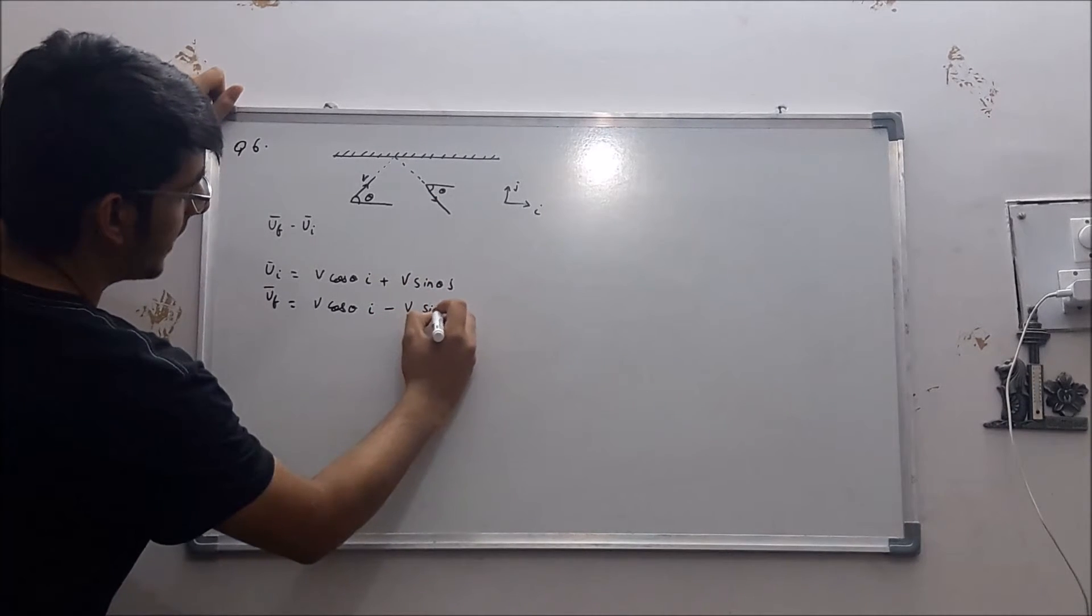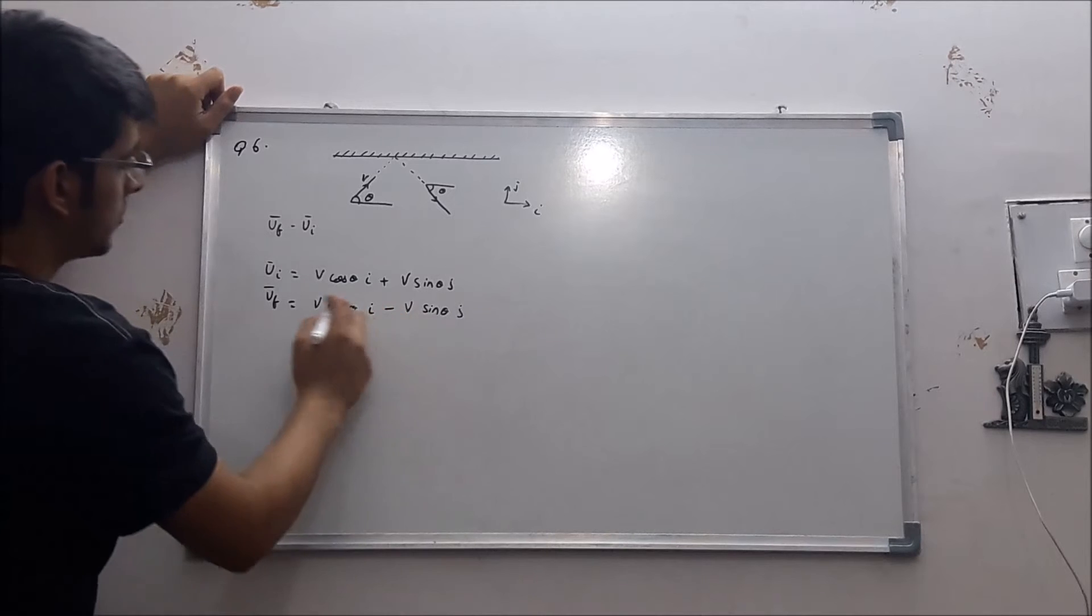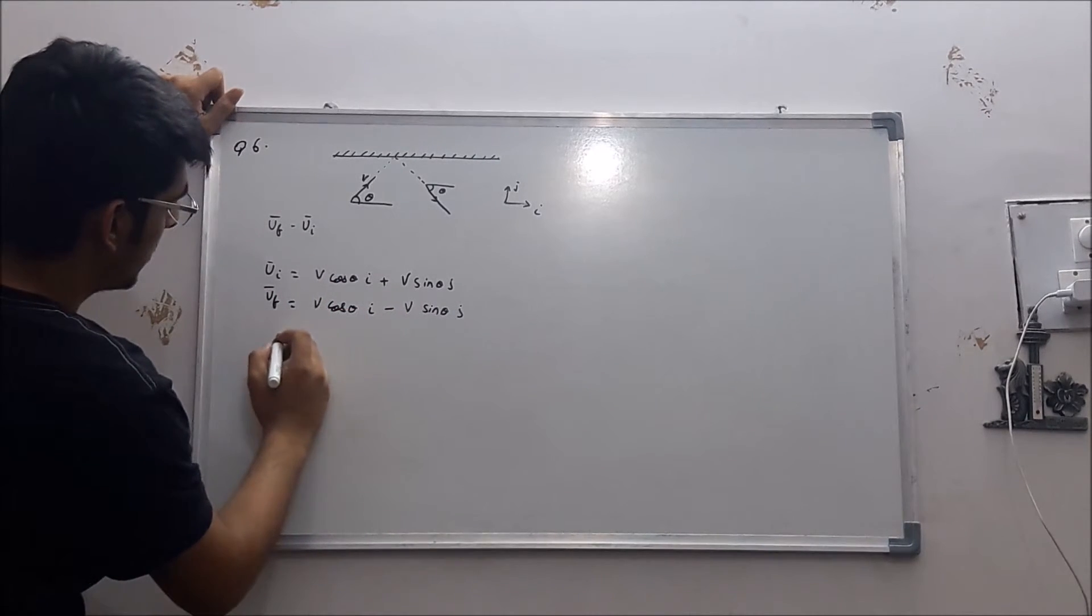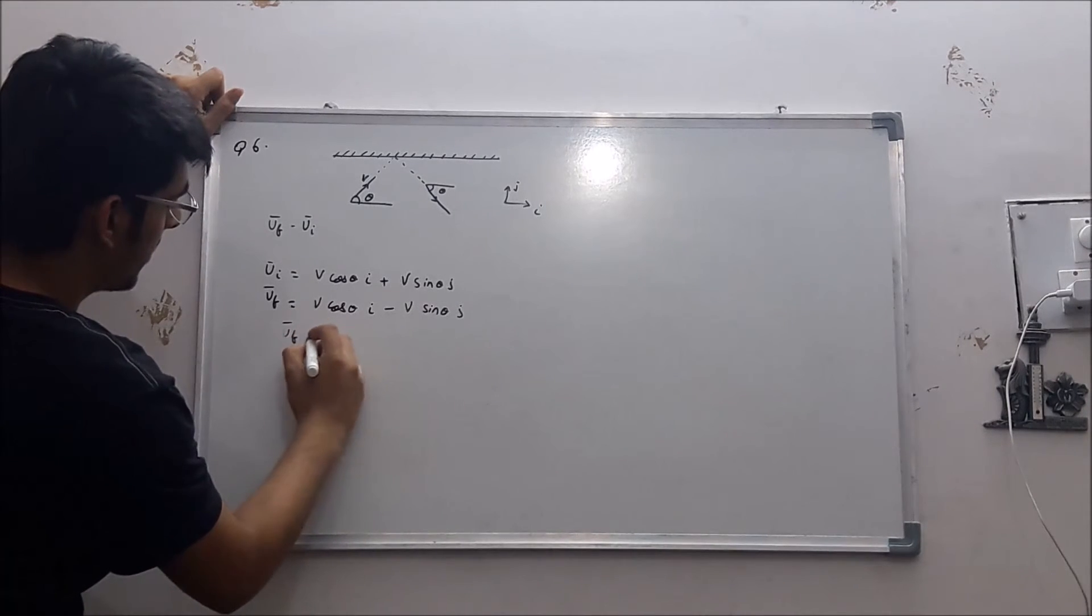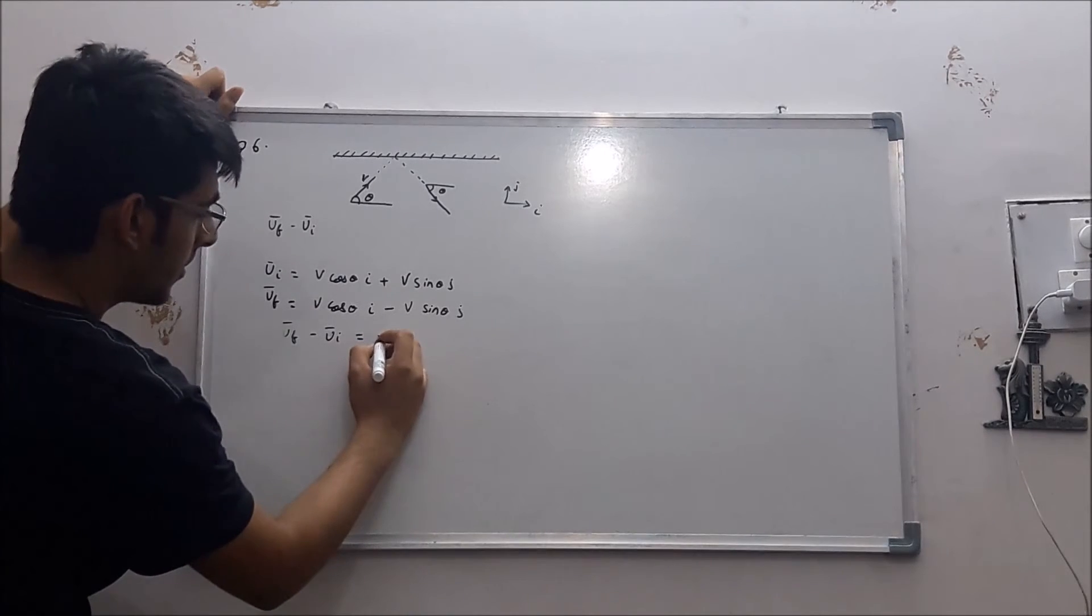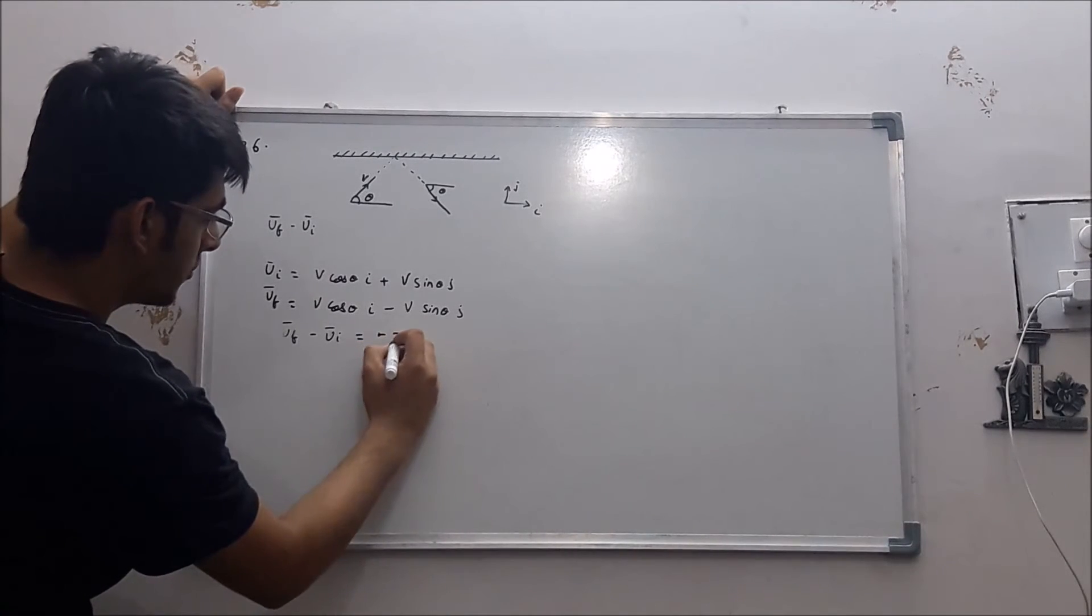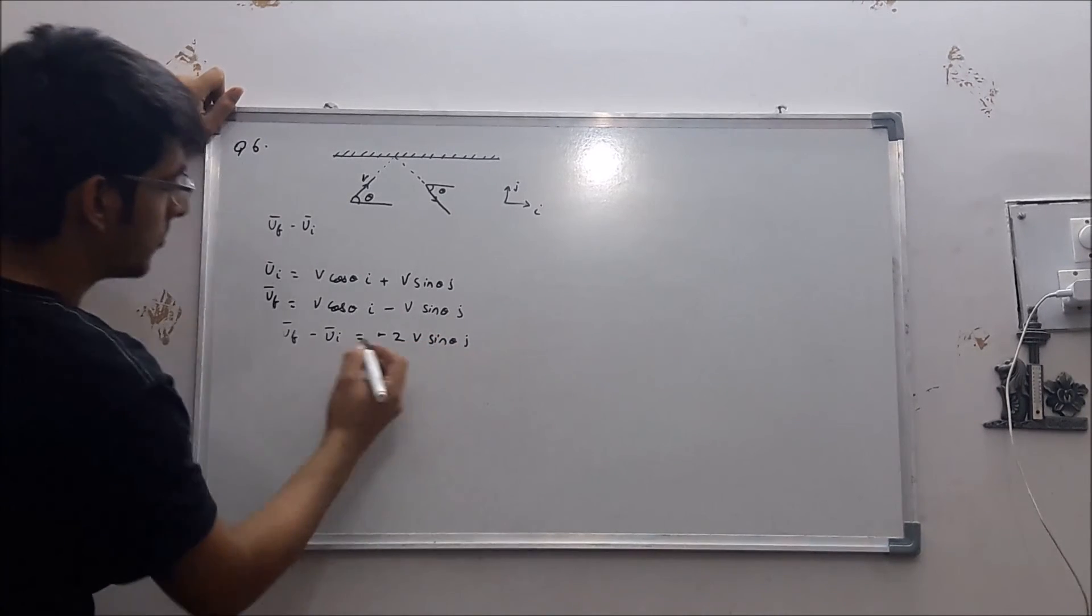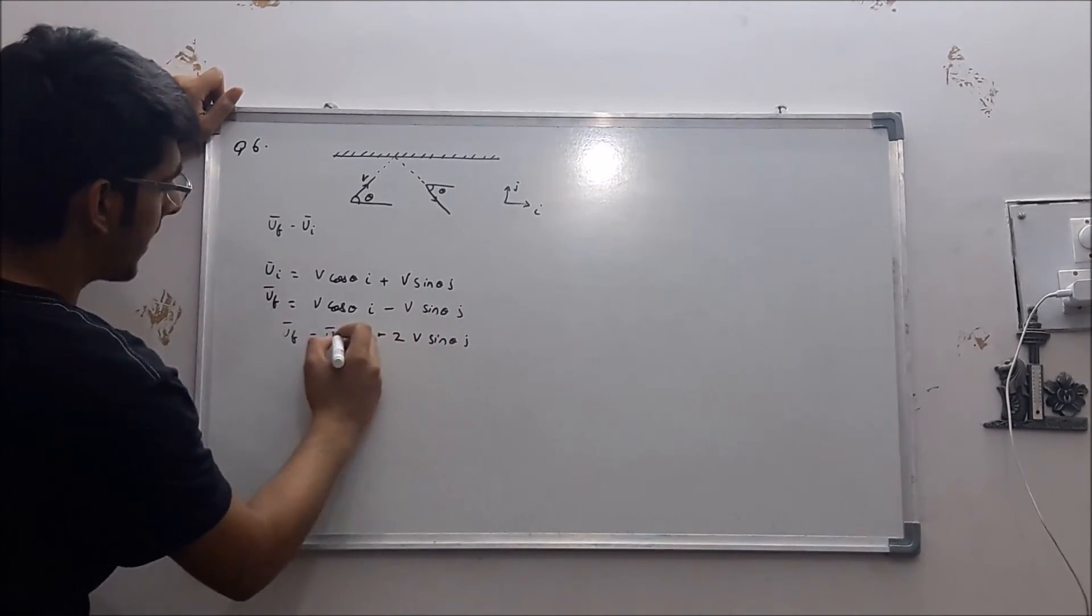So when we subtract final velocity minus initial, you will get as uf minus ui is equal to minus 2v sin theta j. So they have asked momentum, so just multiply it by mass.